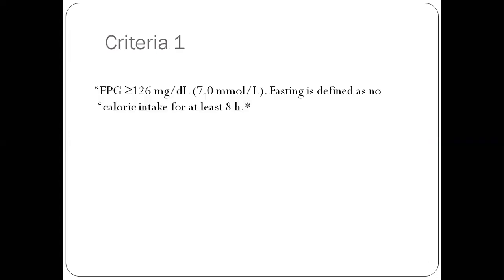Criteria number one: fasting plasma glucose more than or equal to 126 mg per dL. Fasting is defined as no caloric intake for at least eight hours. Now I'm going to discuss some pitfalls of these criteria. The patient is not aware how long he is supposed to fast. Just because the report says fasting, you cannot assume that the patient has fasted for eight hours. You need to ask.